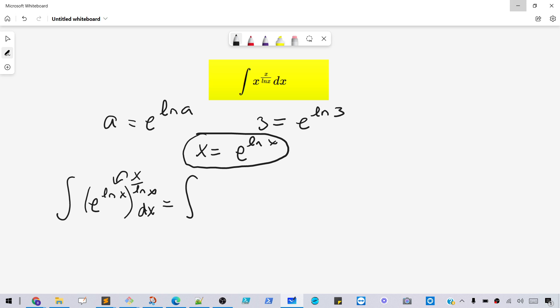And then next, when we have to redistribute that, we're going to have e to the x ln x dx. And that's a common integral that we already know the answer to. And that's going to be just e to the x ln x plus c.